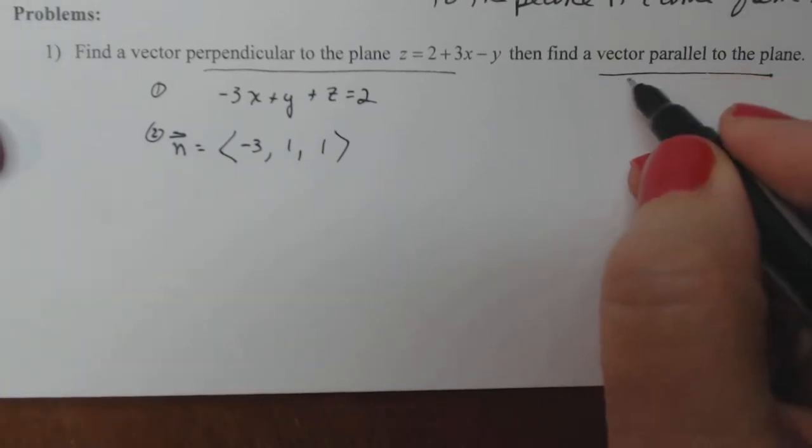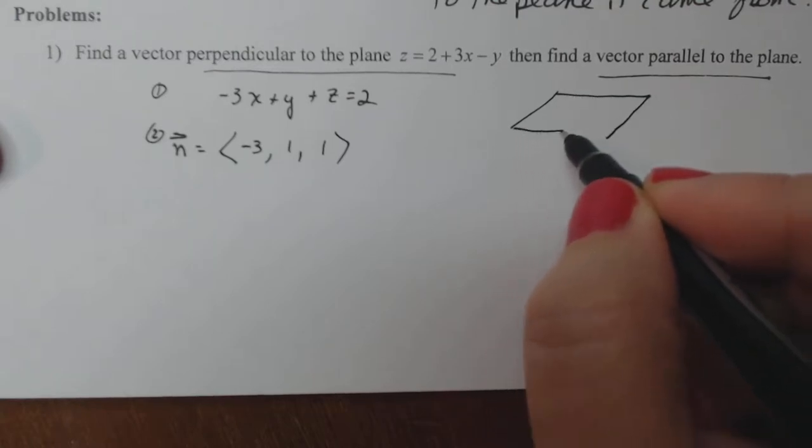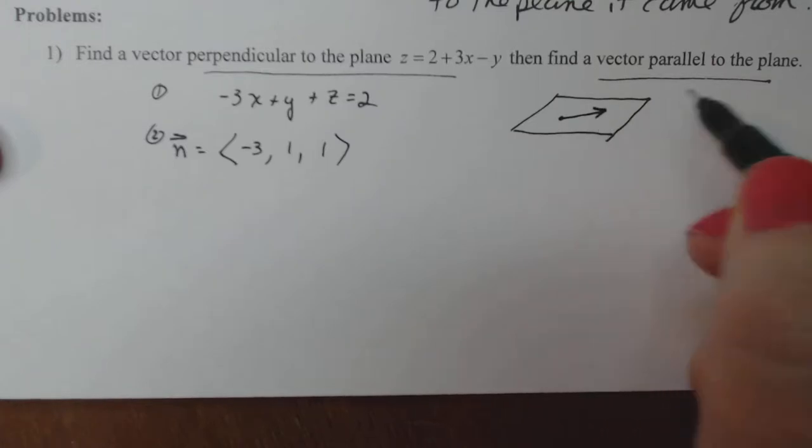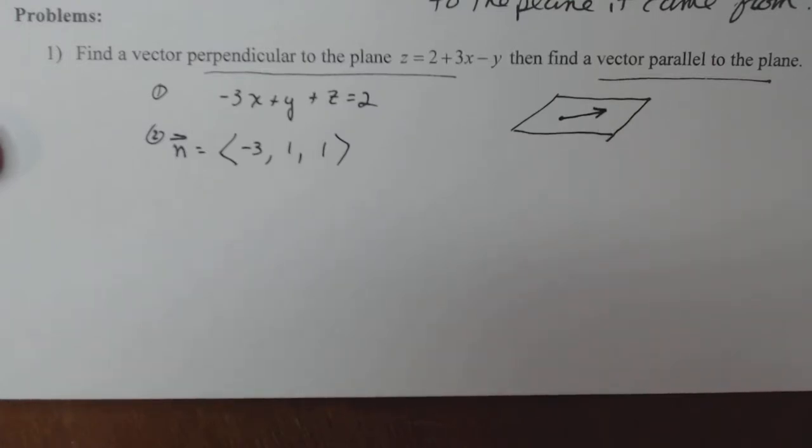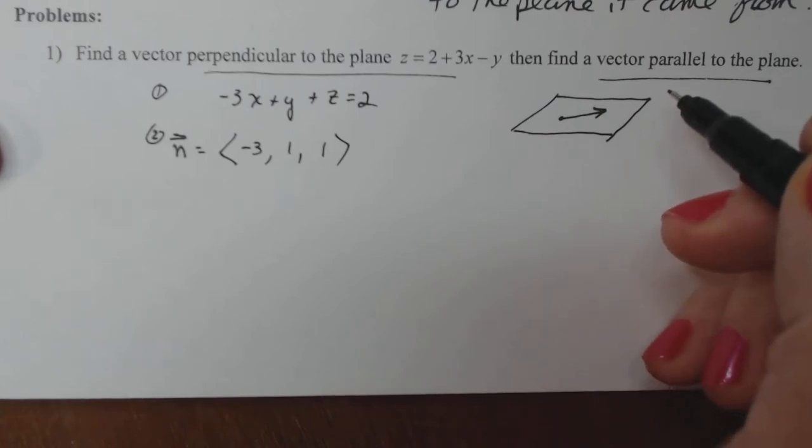Now if I want to find a vector parallel to the plane, that's the idea of taking two points on the plane and then finding the vector between them. That vector will always be parallel. It doesn't matter what direction it's in. As long as it's from two points on the plane, it will always be parallel to the plane no matter where you move it.